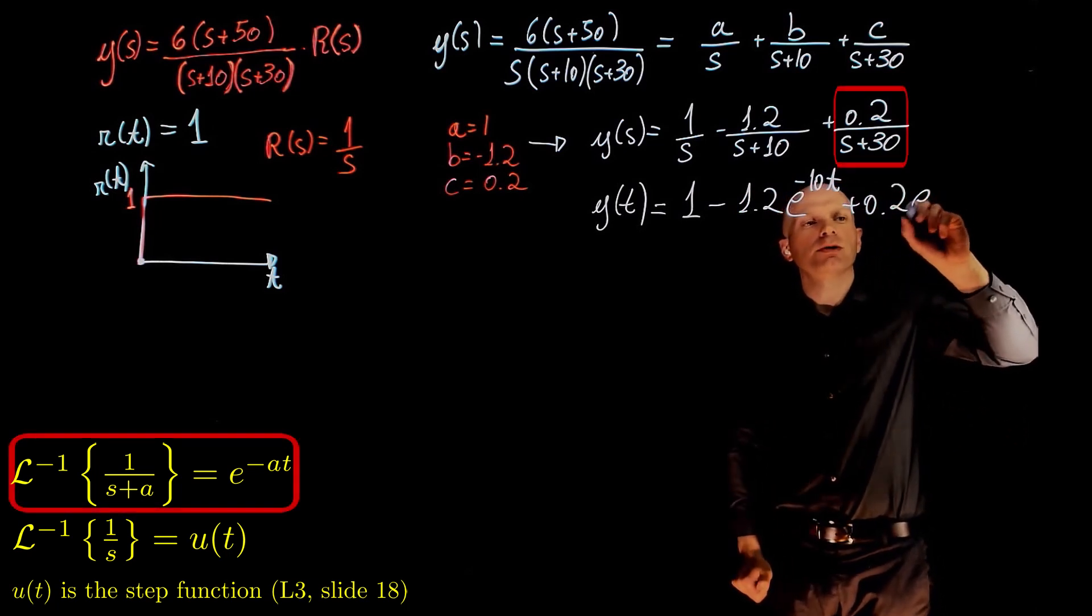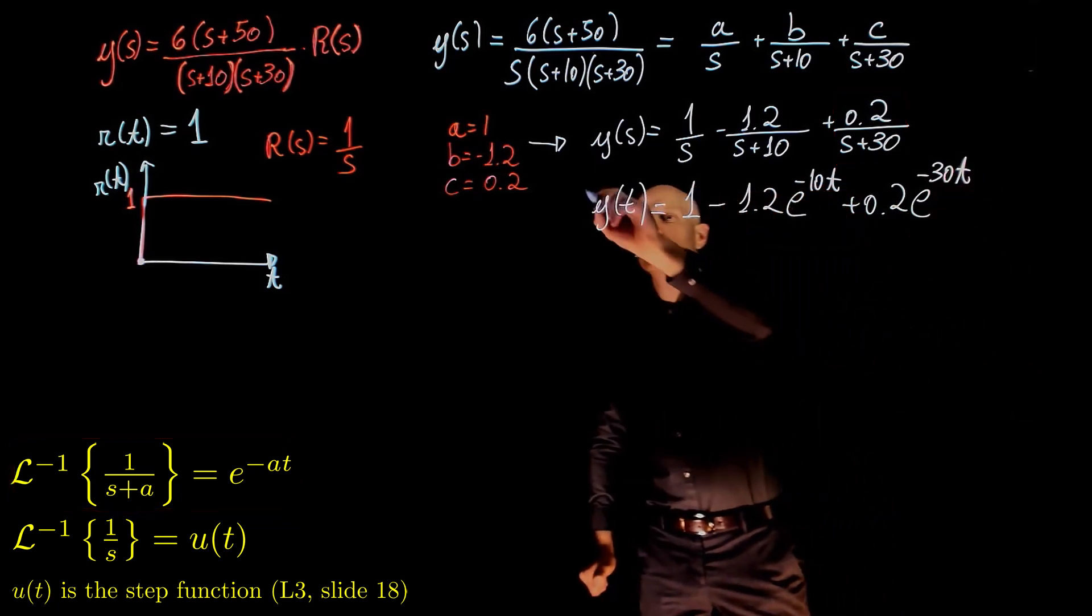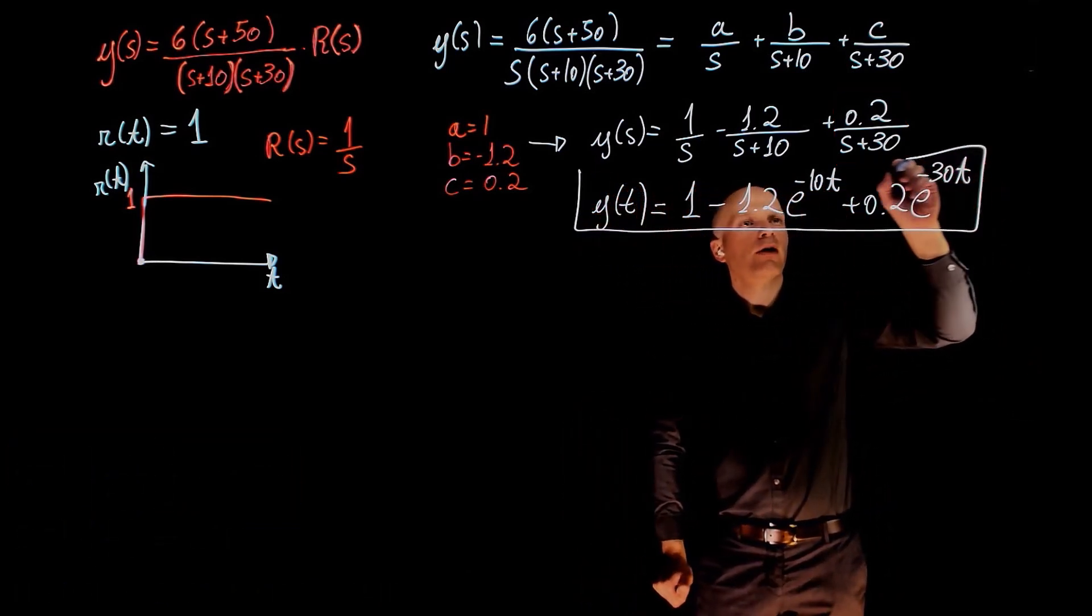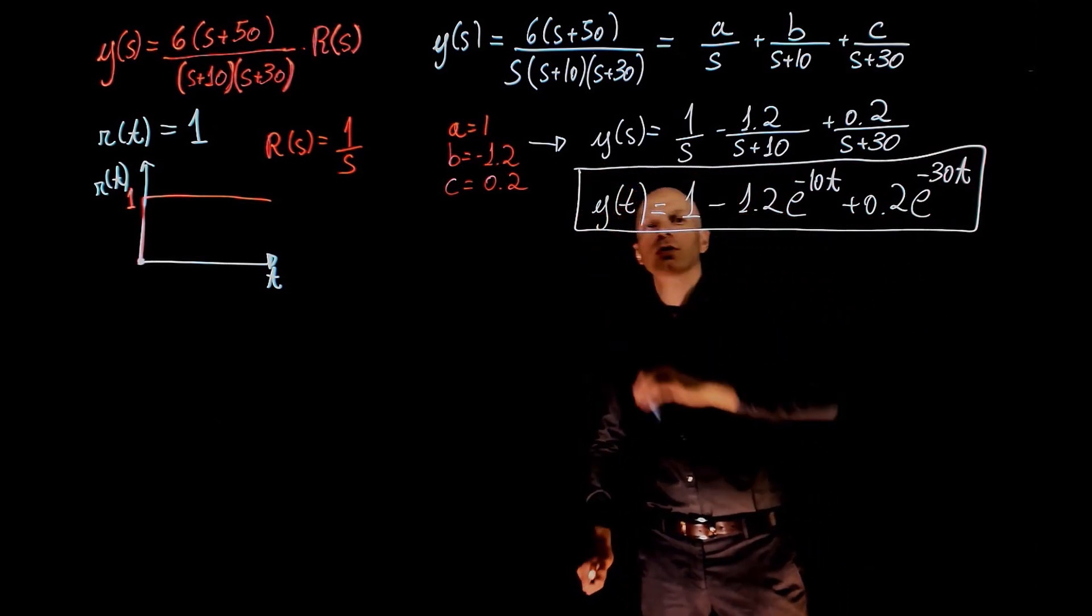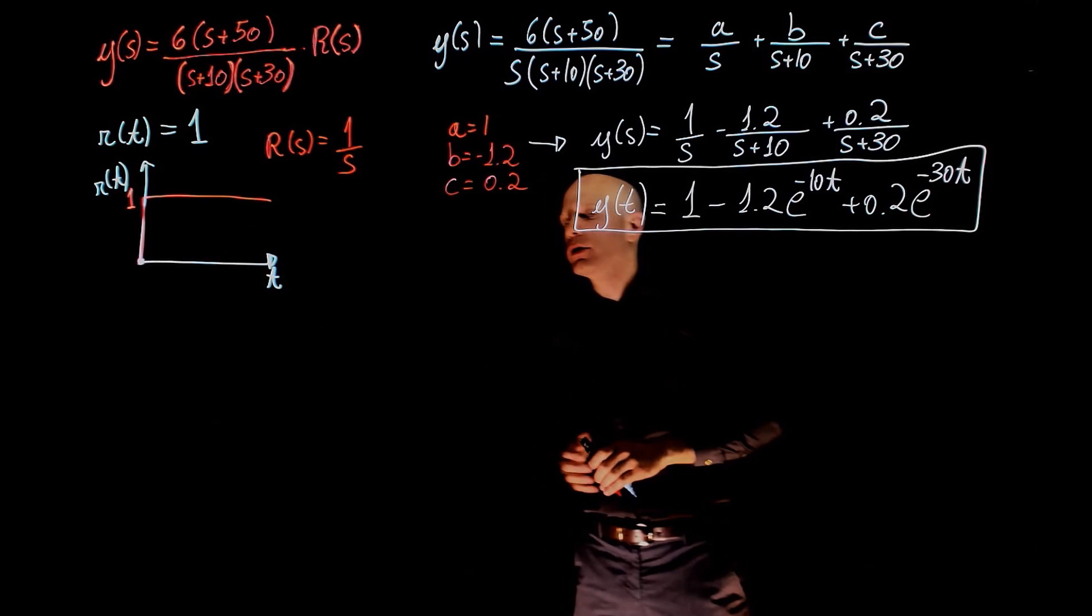you have 0.2 exponential of minus 30t. This is the time response of the printer when a step command is given in the form of r of t.